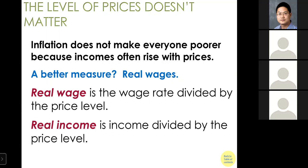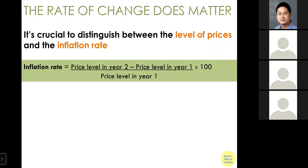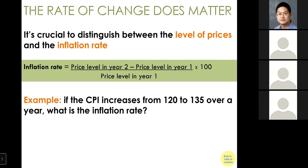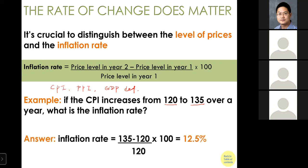A crucial distinction is understanding inflation rate versus the level of prices. The inflation rate is defined as the percentage change in the price level. In the previous chapter, we looked at three different price indices: CPI, PPI, and the GDP deflator. All three are price indices that help us calculate inflation. For example, if CPI increases from 120 to 130, what is the inflation rate?